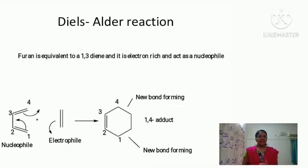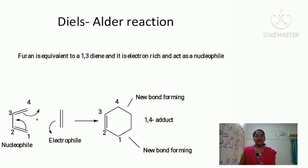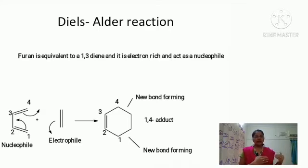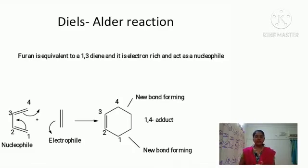Another important addition reaction is the Diels-Alder reaction of furan. Furan acts as a diene — if we remove the oxygen atom from the ring, it acts as a simple 1,3-diene. A diene is an electron-rich compound and acts as a nucleophile. When it reacts with an electrophile, the double bonds shift and a new bond is formed at the second and third positions of the diene, while a new carbon-carbon single bond forms at the first and fourth positions of the furan ring — a 1,4-attack in the Diels-Alder reaction.